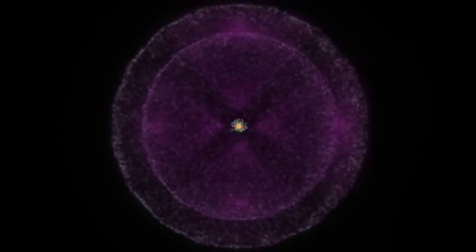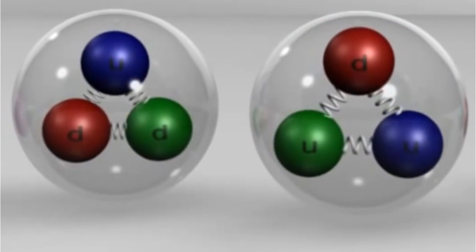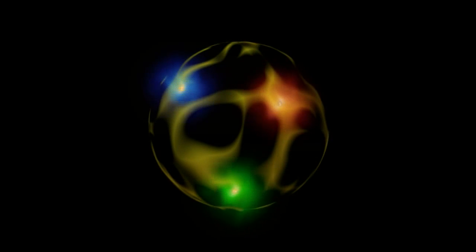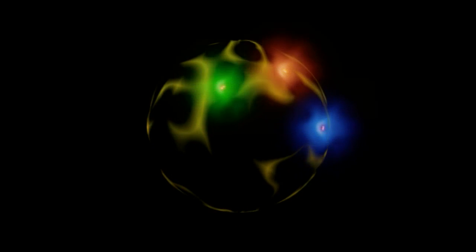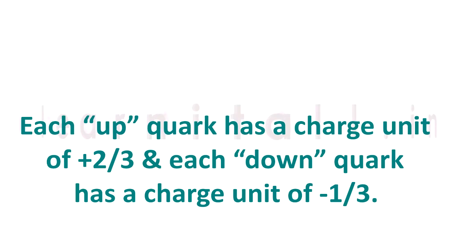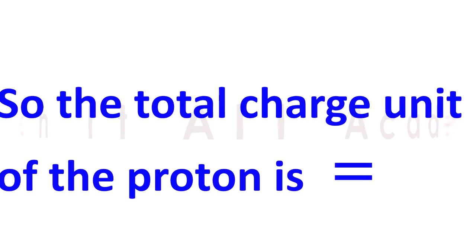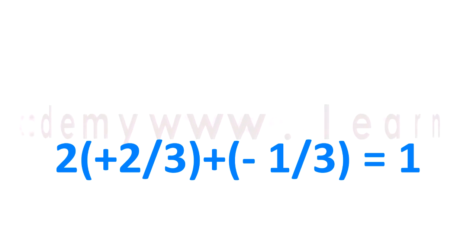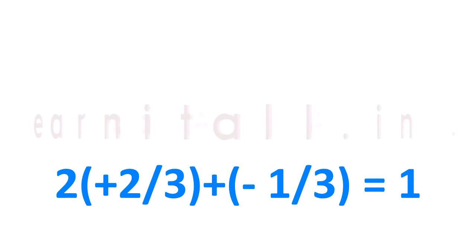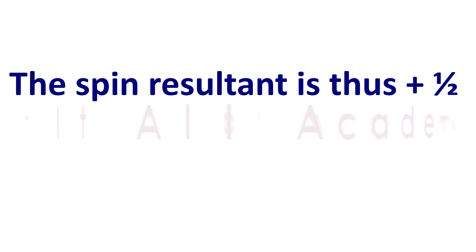Although electron is an elementary particle of lepton class, the protons and neutrons are composed of more than one quark and other particles. The protons are composed of three quarks. Among them, two are up quarks and one is down quark. Each up quark has a charge unit of plus 2/3, and each down quark has a charge unit of minus 1/3. So the total charge unit of the proton is plus one. They also have spin of plus 1/2 and minus 1/2 respectively. The spin resultant is plus 1/2.